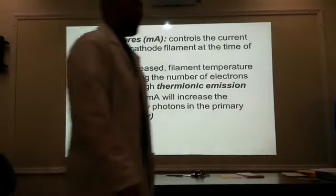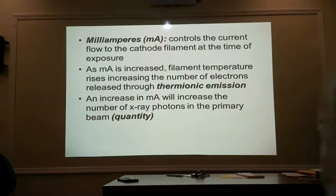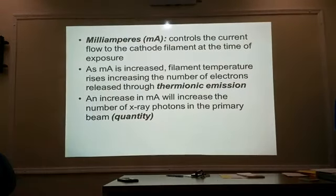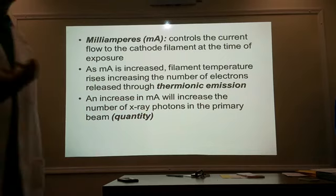Let's talk about MA. Milliamperage controls the current flow to the cathode filament at the time of exposure. With higher MAs, we're controlling the amount of electrons being boiled off from the filament through the process known as thermionic emission. The higher the MA, the hotter the filament gets, the more electrons are boiled off. What are we controlling there? Quantity. We're controlling the number of electrons being boiled off.